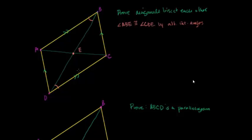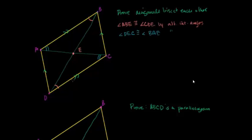If we look at diagonal AC as a transversal, it intersects the two parallel lines, so alternate interior angles must be congruent. Angle DEC must be congruent to angle BAE, for the exact same reason. We also know from the previous proof that opposite sides of a parallelogram are congruent, so DC equals AB. So we have two sets of corresponding angles congruent and a congruent side in between.